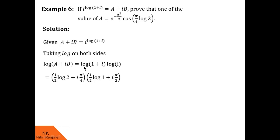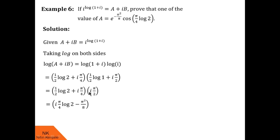Using principal values, log(1+i) can be written as (1/2)log 2 + i(pi/4), and log i can be written as (1/2)log 1 + i(pi/2). Replacing log 1 with 0, we are left with ((1/2)log 2 + i(pi/4)) into i(pi/2). Multiplying these two brackets, we get i(pi/2)(1/2 log 2), that is i(pi/4)log 2, plus i squared (that is minus 1) into pi squared by 8.